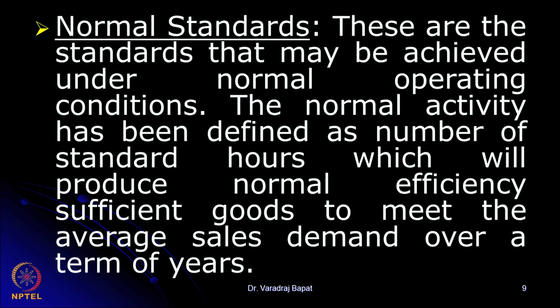The next type is normal standards. It is very difficult to achieve ideal standards, so we bring them down to normal standards. These may be achieved under normal operating conditions. Instead of assuming the highest possible production, here we assume there will be some normal idle time and activity will proceed with normal efficiency. There are good equipments, but not necessarily the best. The demand is good but not necessarily the maximum. These are the normal standards, set for normal conditions.